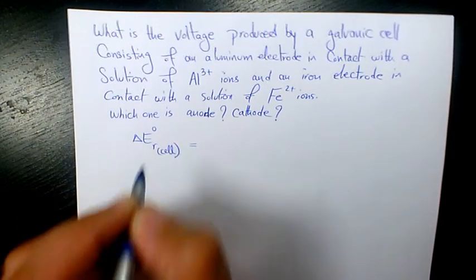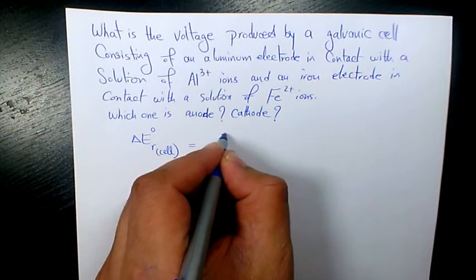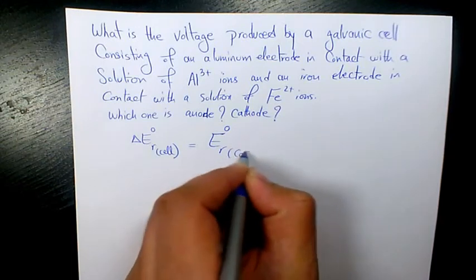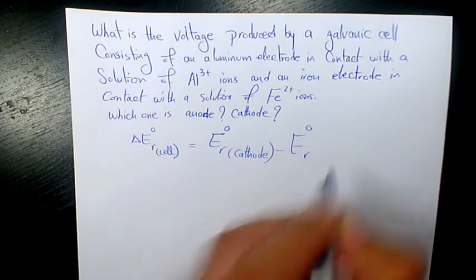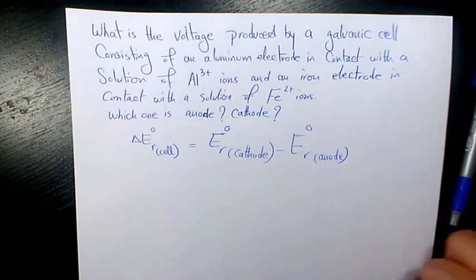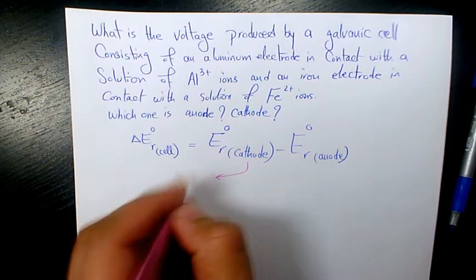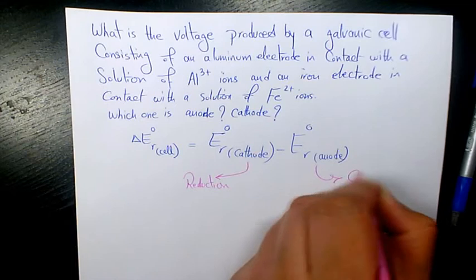Standard cell potential equals the standard reduction potential in cathode minus the standard reduction potential in anode. Cathode is where reduction happens and anode is where oxidation happens.